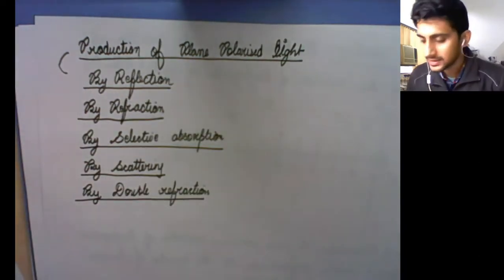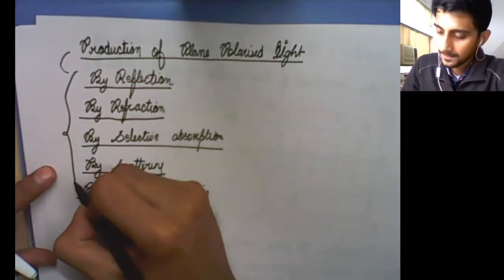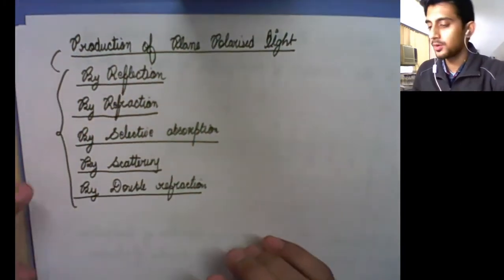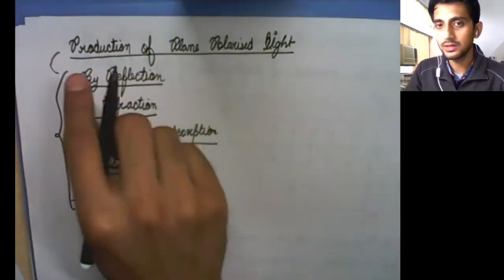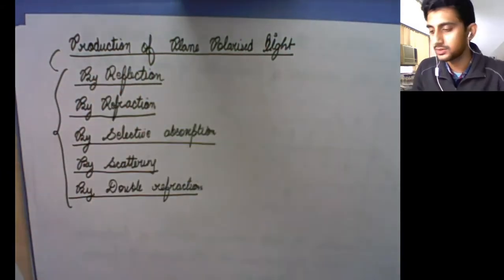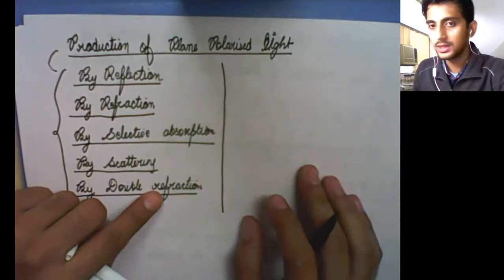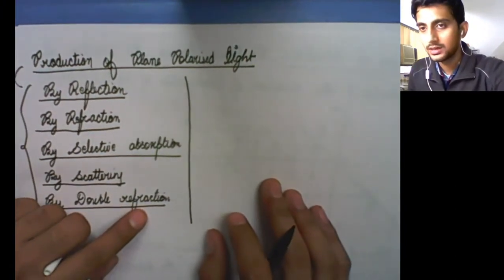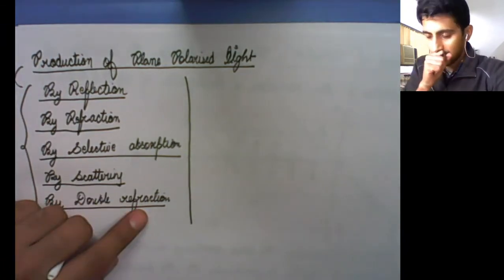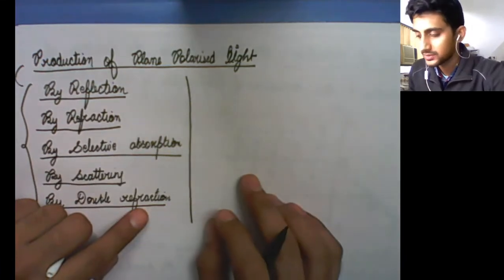These are the most popular ways to produce plane polarized light from unpolarized light. First of all, let's see how we can produce plane polarized light from unpolarized light using reflection.